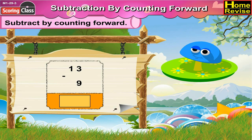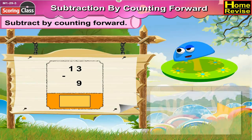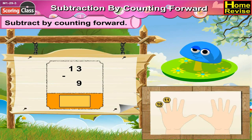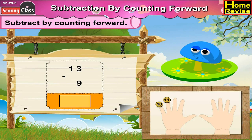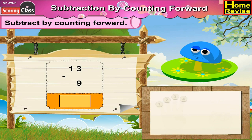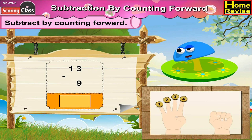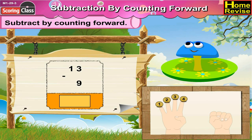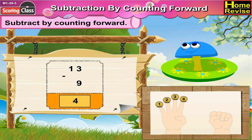13 minus 9 is dash. Now by counting forward from 9: 10, 11, 12, 13. That is 4 steps. So 13 minus 9 is 4.